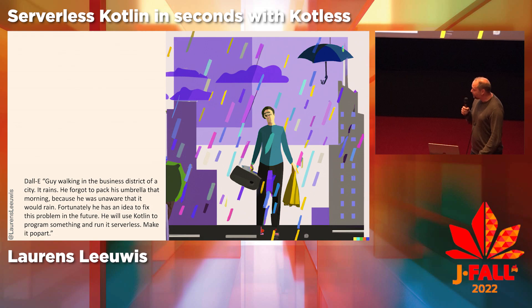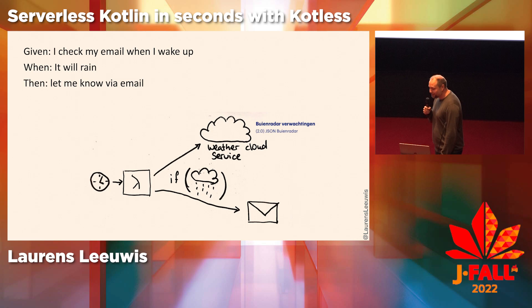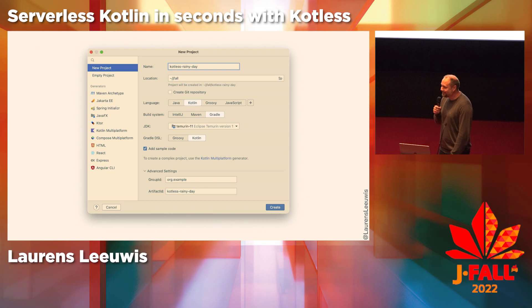When doing a private project I always like to work on a use case as well — you need to define a goal. Sometimes I forget to pack my umbrella when it's going to rain, and I'm definitely going to solve that with Kotlin and serverless. My user story: given that I check my email when I wake up, when it will rain, then please let me know via email. I want to trigger a Lambda serverless function, connect to a weather cloud service, and if it's going to rain, send me an email. Let's generate this application in the remaining four minutes.